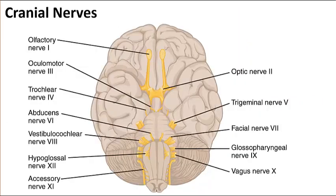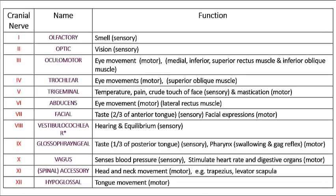The cranial nerves are classified as sensory, motor, or mixed. Sensory nerves contain sensory neurons only, motor nerves contain motor neurons only, and mixed nerves contain both. The first two pairs attach to the forebrain, and the remaining ten pairs attach to the brain stem. You will need to know each cranial nerve by name and number, be able to describe its function, and identify whether it is sensory, motor, or mixed.